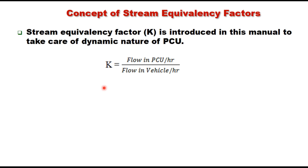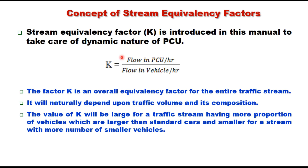The concept of stream equivalency factor was introduced in the Highway Capacity Manual and is defined as the flow in PCU per hour divided by flow in vehicles per hour. The idea is: rather than determining PCU for each vehicle type individually, can we determine an equivalency factor k for the entire traffic stream? This k factor is an overall equivalency factor — if you know this value, you simply multiply the flow in vehicles per hour to get the flow in PCU per hour. Naturally, k will be larger for streams with high proportions of vehicles larger than a standard car, and smaller for streams with more small vehicles.